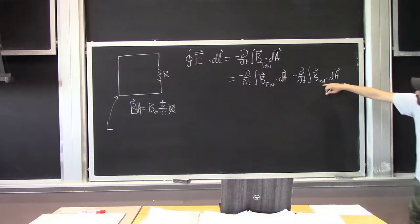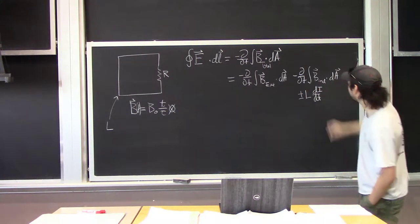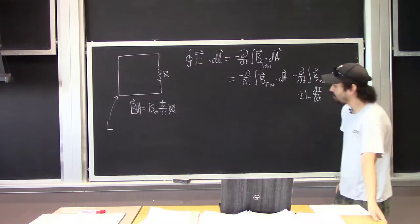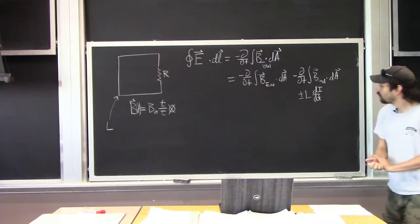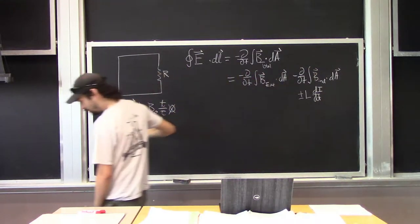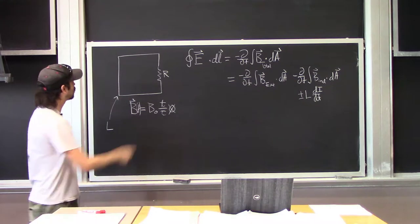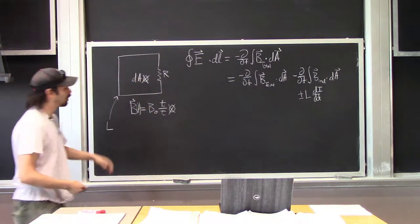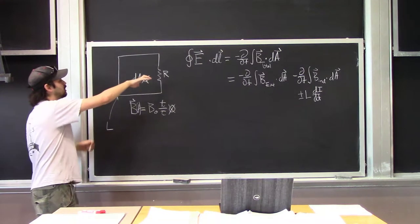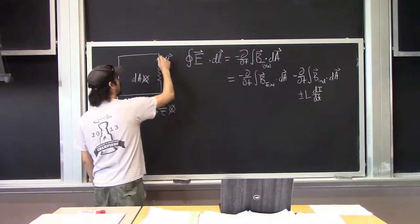That second term can be written as plus or minus L di/dt, and we'll discuss whether it's plus or minus based on the direction we choose for dA. Usually I like to start by choosing dA in the direction of the original magnetic field. There's the connection between dA and dL via the right-hand rule: thumb in the direction of dA, curl in the direction of dL — so dL goes this way, and the current goes that way.